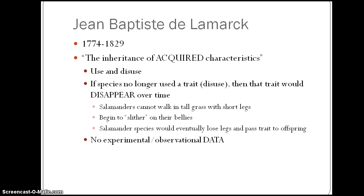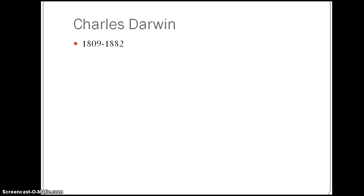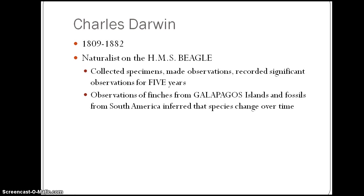Darwin knew Lamarck's work very well and actually talked a lot about it in his writings. Darwin originally started by studying medicine in college, but couldn't stand the sight of blood, so he quickly changed to botany and naturalism. A mentor of his recommended him to be a naturalist on the HMS Beagle. A naturalist would collect specimens from different places and compare and contrast those specimens. Darwin collected specimens from places like the Pacific Islands, the Galapagos Islands, and South America for five years.